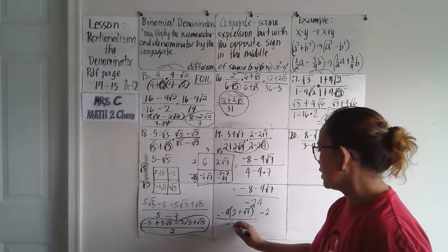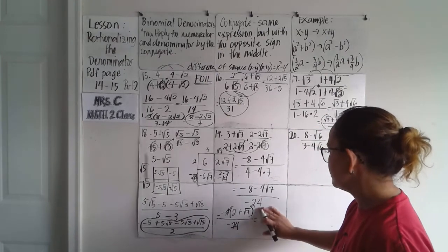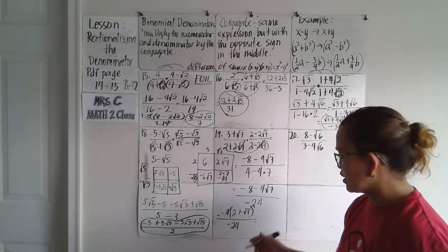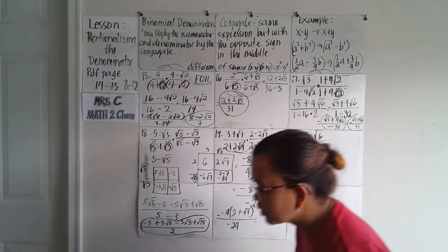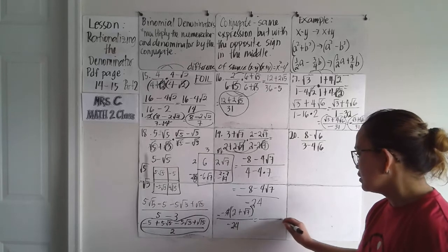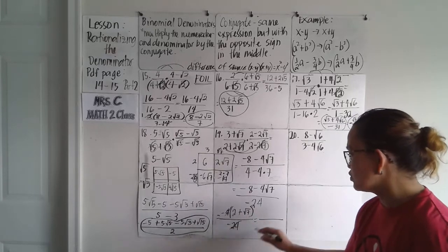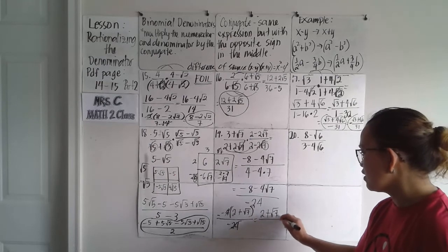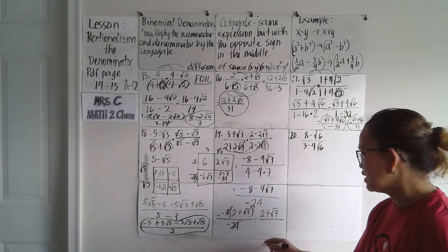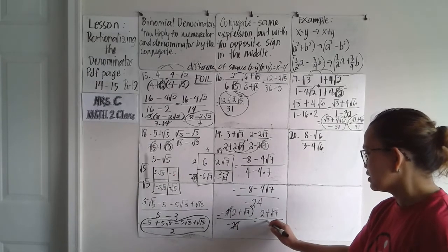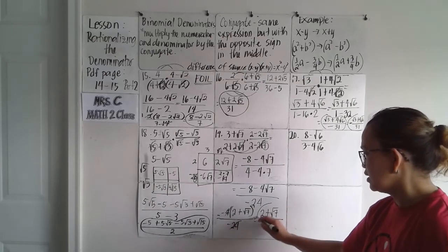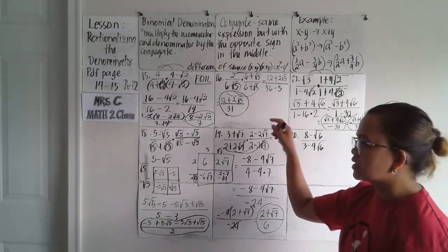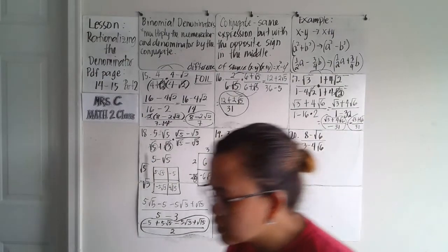I'm sorry — that denominator should be negative twenty-four, not positive. After factoring out negative four from both numerator and denominator, the negatives cancel. The final answer is two plus square root of seven over six. Please comment below if you see any errors in my solution for number 19.